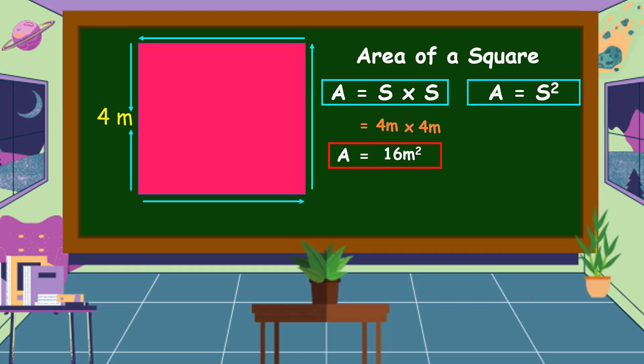We can also use the other formula: area is equal to side squared. Our side is 4 meters, raised to the power of 2. 4 times 4 is equal to 16 meters squared. So these are the two formulas we can use to find the area of a square.